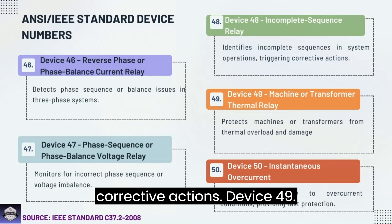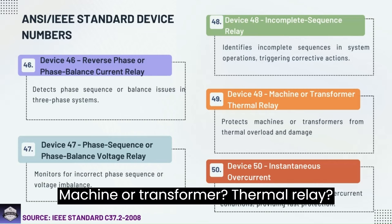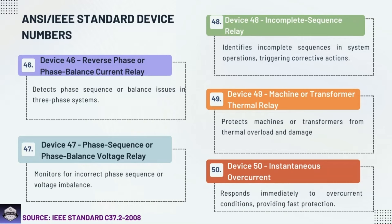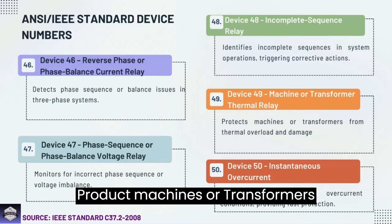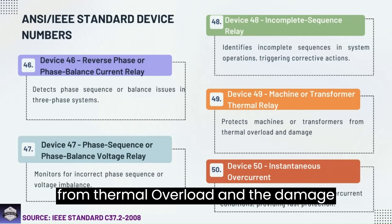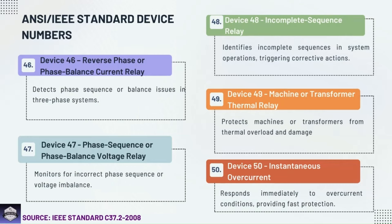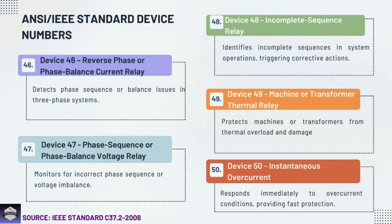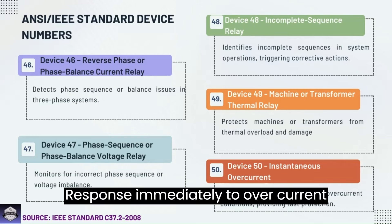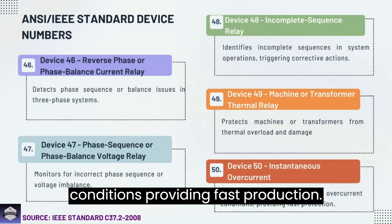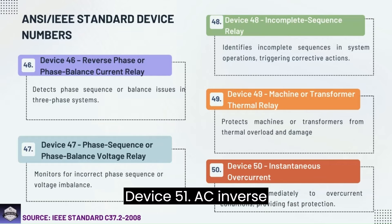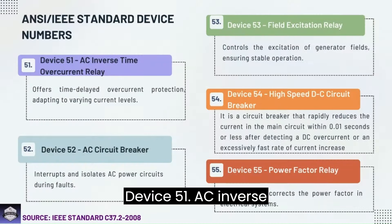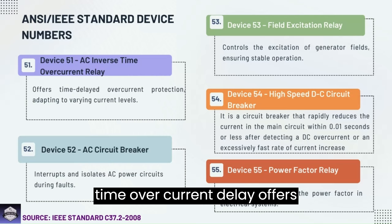Device 49: Machine or transformer thermal relay — protects machines or transformers from thermal overload and damage. Device 50: Instantaneous overcurrent relay — responds immediately to overcurrent conditions, providing fast protection. Device 51: AC inverse time overcurrent relay — offers time-delayed overcurrent protection, adapting to varying current levels.